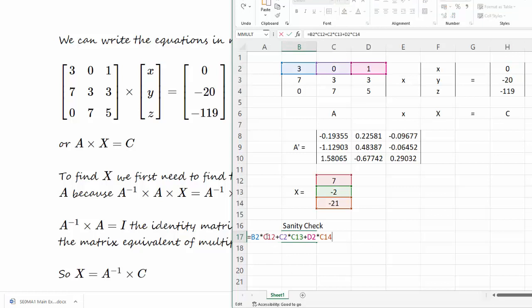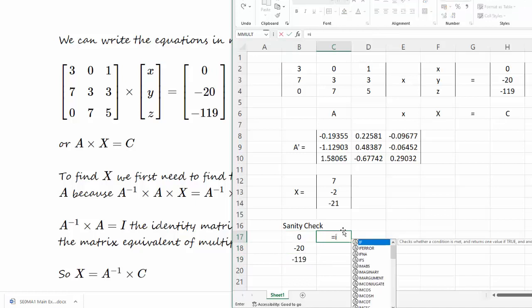I need to make a slight change to this expression. Where I've got C12, I'd like that to remain constant so we'll put a dollar in there. C13 wants a dollar and C14 wants a dollar. So now what I can do is drag this down and it will calculate all three lines.